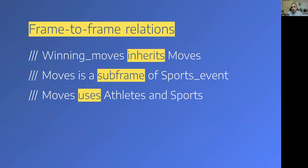There are semantic structures in FrameNet that could help in this process, the first of which is frame-to-frame relations. Frame-to-frame relations are present in every FrameNet, and they are what make a FrameNet a net and not just a list of frames. For example, the Winning Moves frame inherits the Moves frame because it is more specific — it's a kind of sports move. The Moves frame is a subframe of the Sports Event frame, and it also uses, meaning it makes reference to, other frames such as Athletes or Sports.